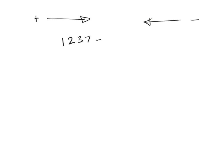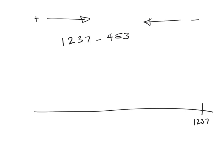Now let's try a subtraction problem. With addition we move from left to right on the number line, but for subtraction we go from right to left. For 1,237 take away 453, the number line starts at 1,237 on the right-hand side. Partitioning 453 gives 400 plus 50 plus 3, and because it is subtraction we apply minus 400, minus 50, minus 3.